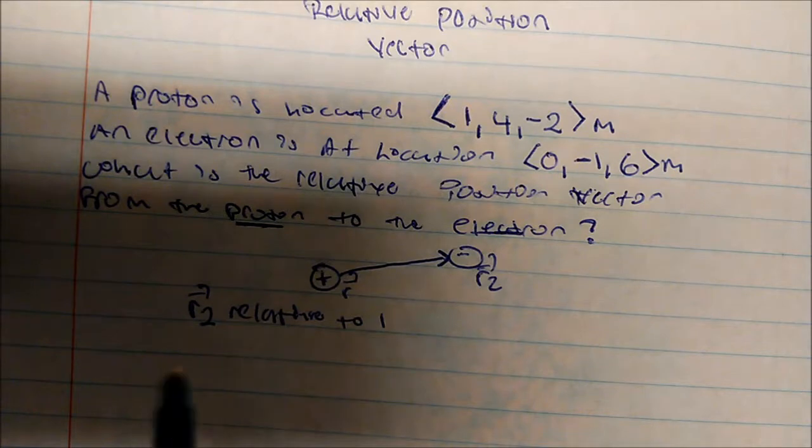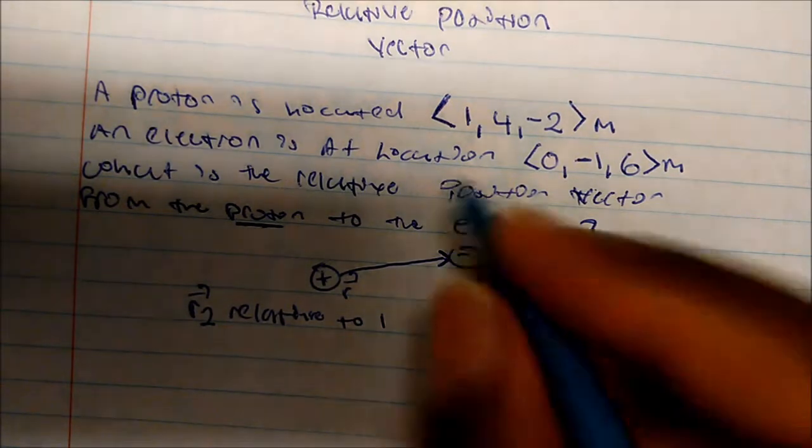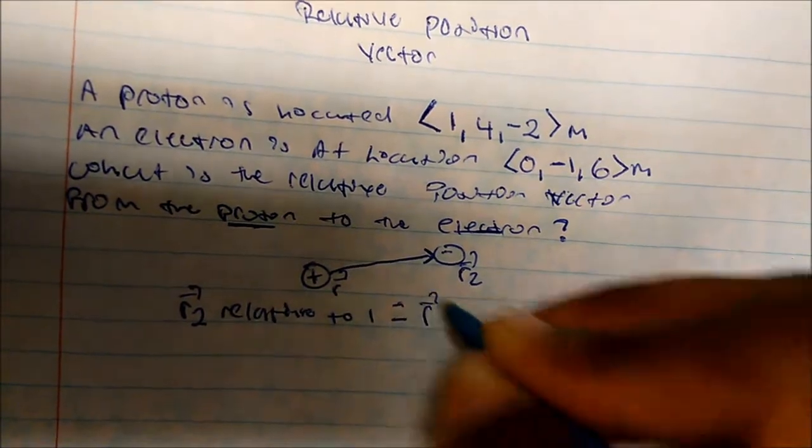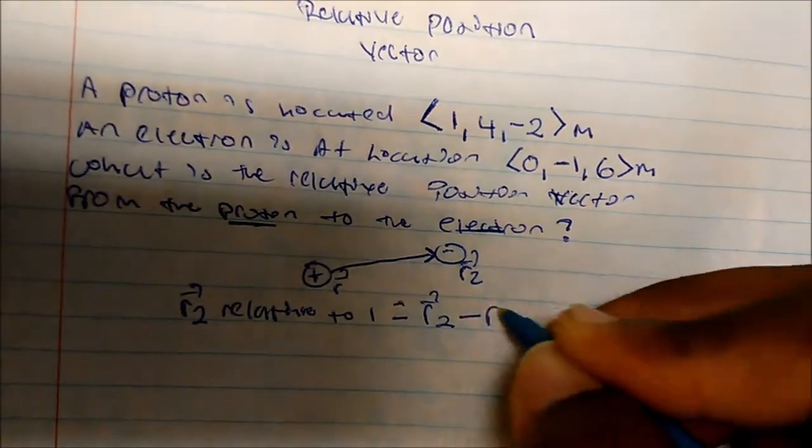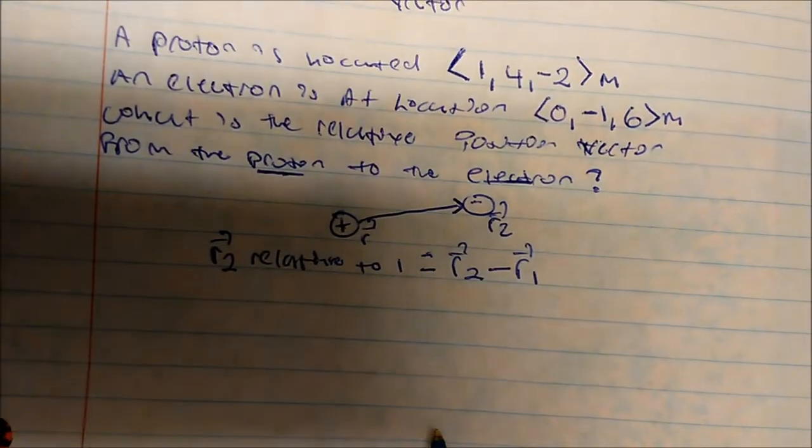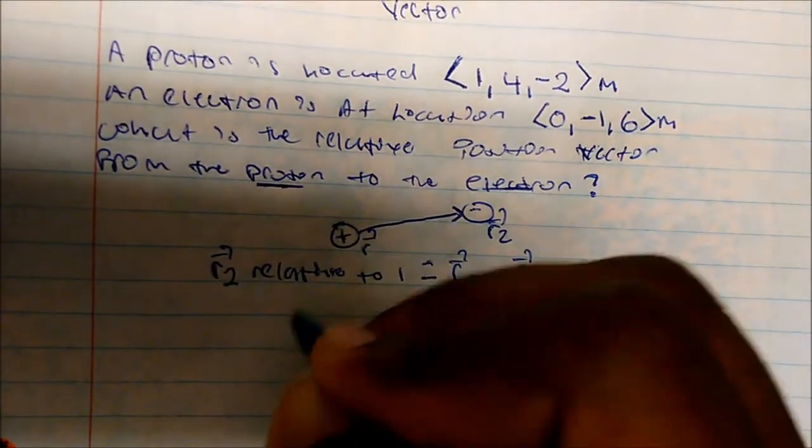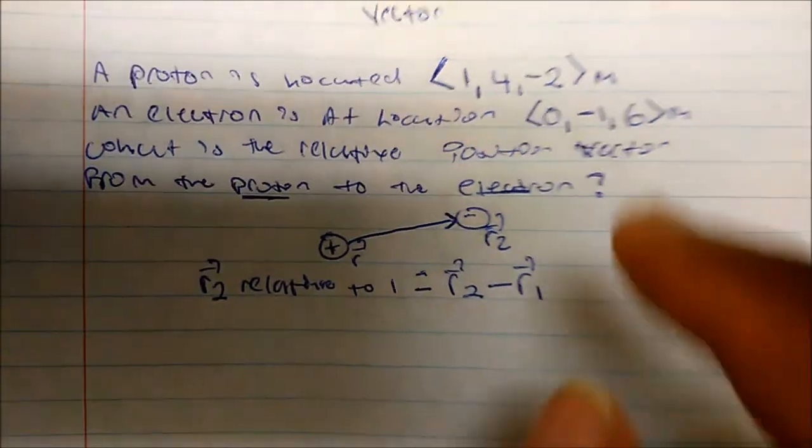So therefore, we know the relative position vector is defined as R2 relative to 1. And that simply means we're going to take the second vector, which is R2 minus R1. So if you want to find a relative position vector for this, we simply take the electron, which is R2.